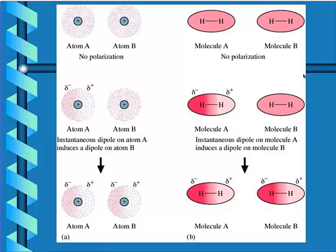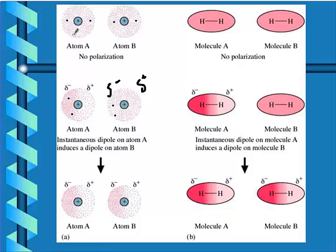Consider atom A and atom B with no polarization — two electrons equal distance from each other. All of a sudden we get an instantaneous dipole on atom A: maybe both electrons wind up on the left side, leaving the right side slightly positive. That causes the electron in atom B to shift toward the slightly positive side, making one side slightly negative and the other slightly positive, which then affects the next atom and so on. With only two electrons, the chances they're on the same side aren't as great as with more electrons, where they won't be as evenly distributed.